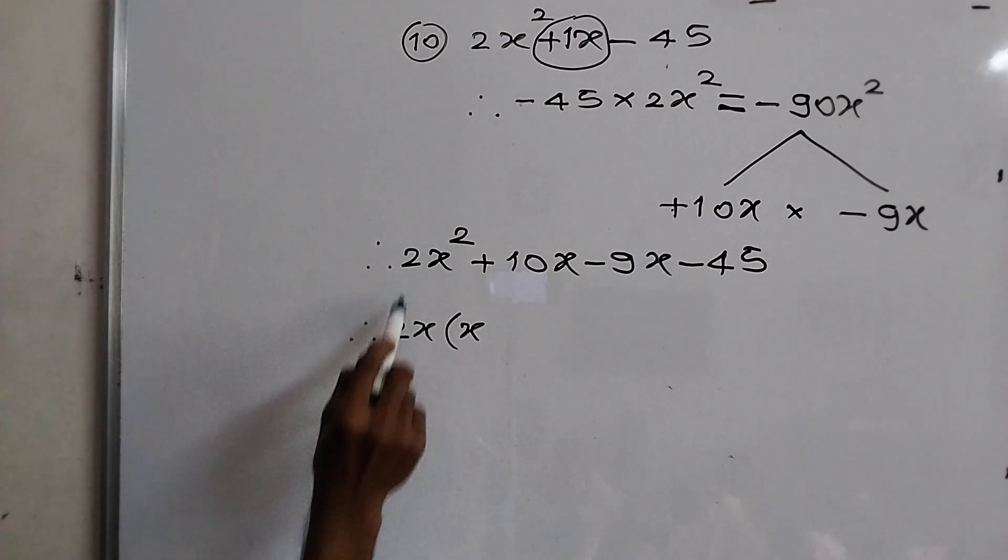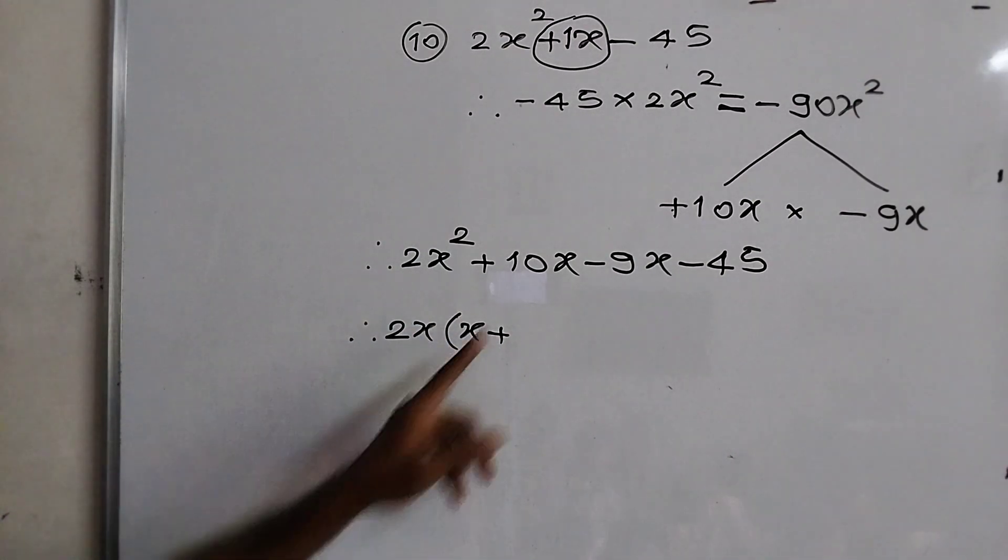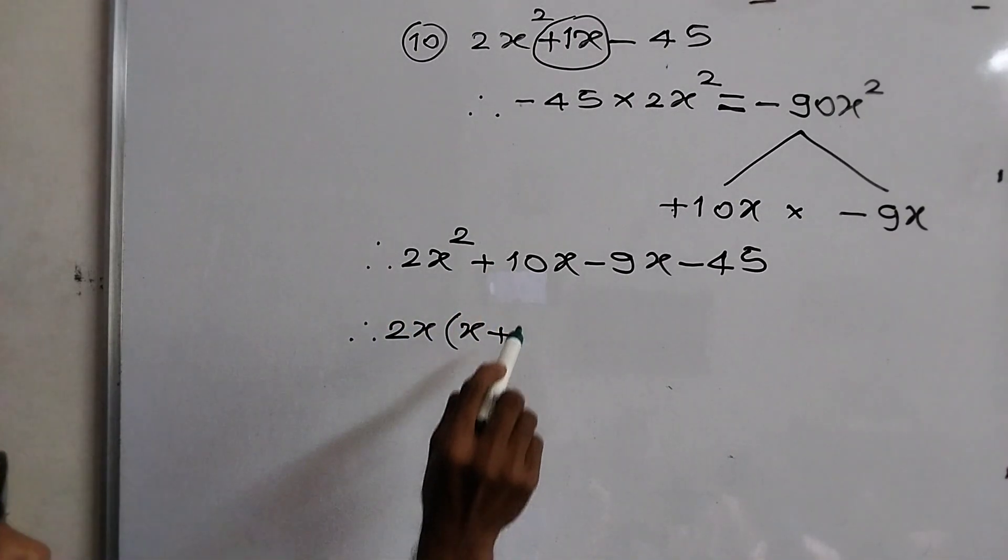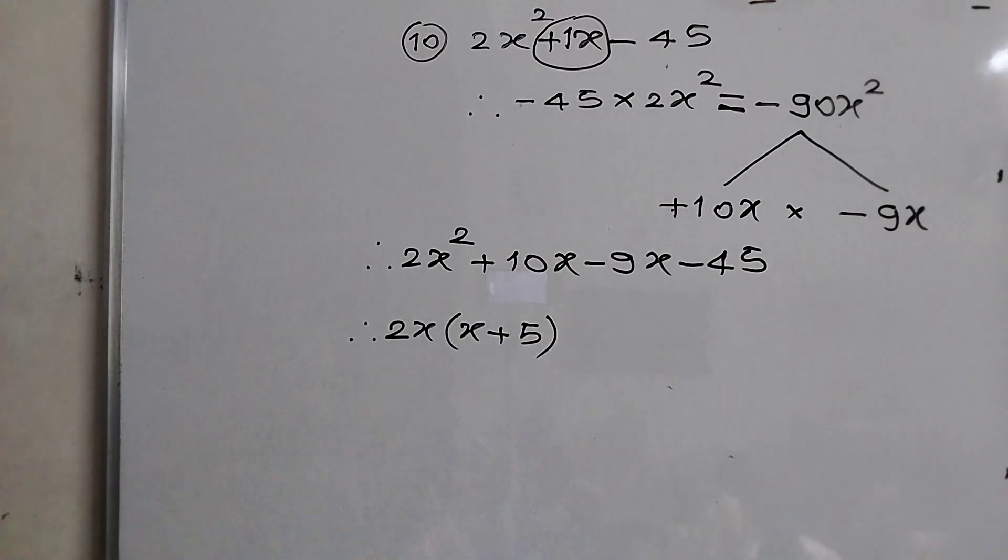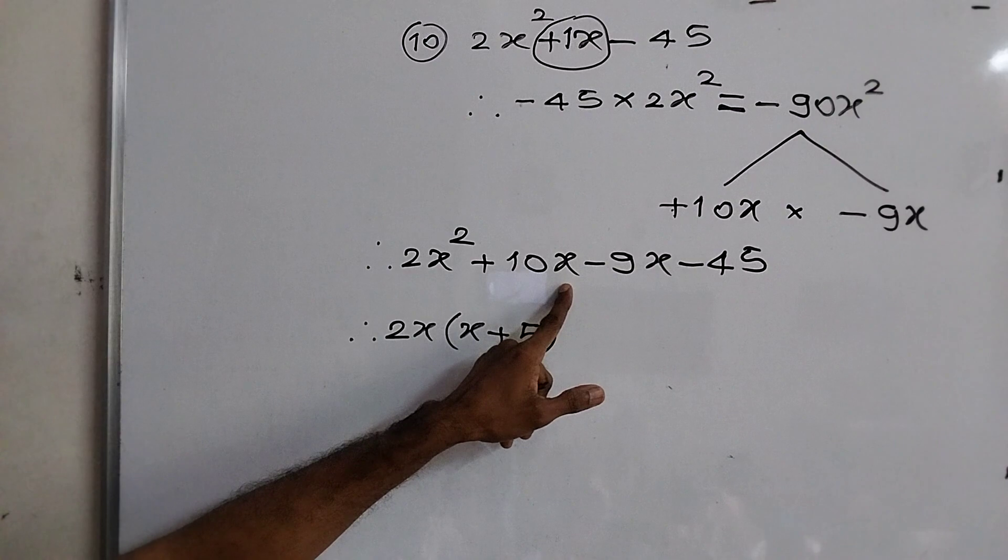x. See here, 2x into x, x square. This 10 comes in table of 2 at 5. 2 into 5, 10. And x stick with 5.